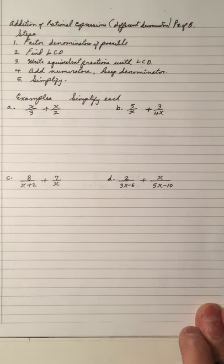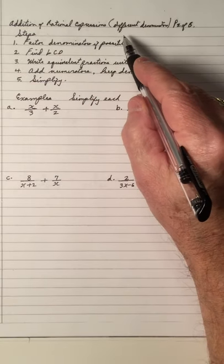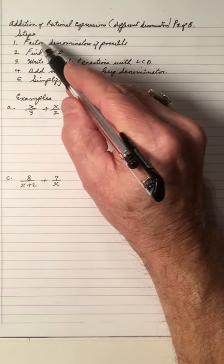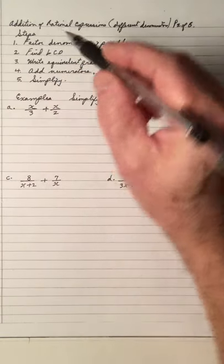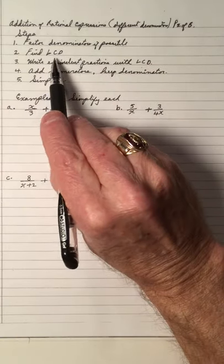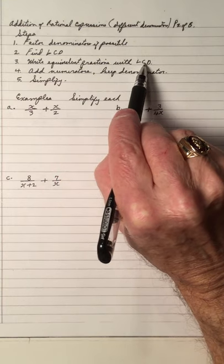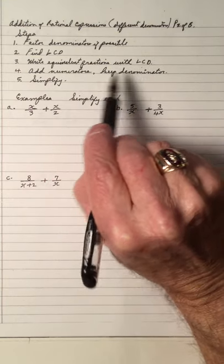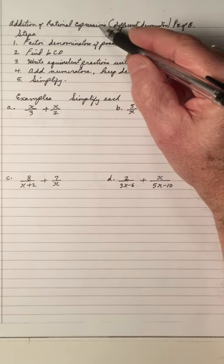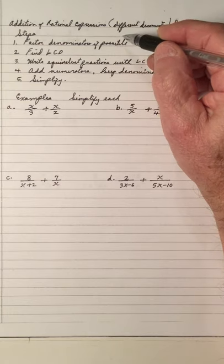Welcome to my video on adding rational expressions with different denominators. The addition of rational expressions with different denominators follows the steps outlined below: 1. Factor the denominator if possible. 2. Find the LCD. 3. Write equivalent fractions with the LCD. 4. Add the numerators, keep the denominator, and simplify. This is the pattern we'll use for adding rational expressions when we have different denominators.